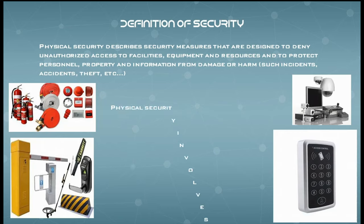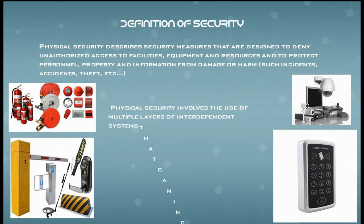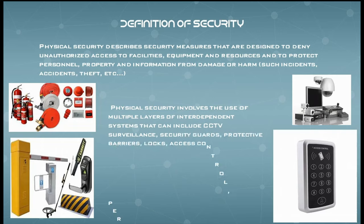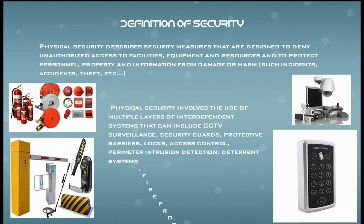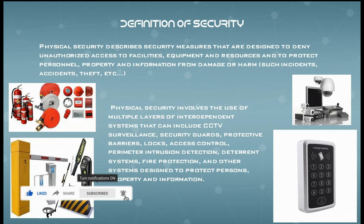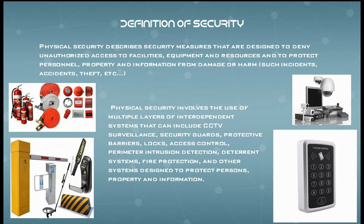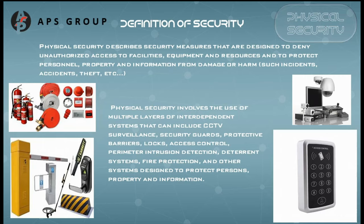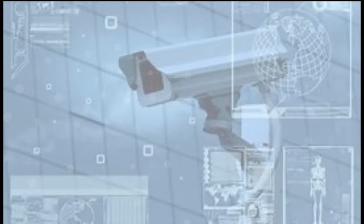Physical security involves the use of multiple layers of interdependent systems that can include CCTV surveillance, security guards, protective barriers, locks, access control, perimeter intrusion detection, deterrent systems, fire protection, and other systems designed to protect persons, property, and information. In today's topic we will discuss only a few of these, as each topic covers different scenarios and will be discussed in detail in future videos.